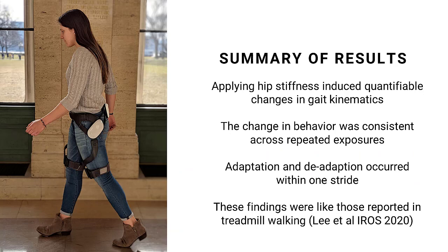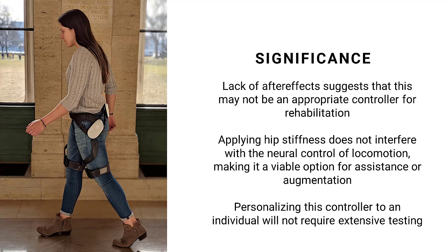To summarize, our results showed that applying hip stiffness—positive or negative—induced quantifiable changes in gait kinematics. The change in behavior was consistent across repeated exposures. There were no after effects, and adaptation and de-adaptation occurred within one stride. These findings were also consistent with those reported during treadmill walking. The lack of any after effects suggests that this may not be an appropriate controller when it comes to rehabilitation.